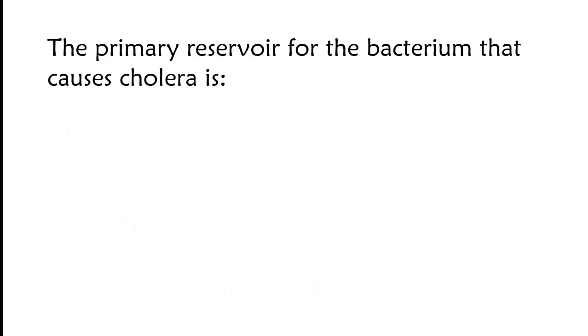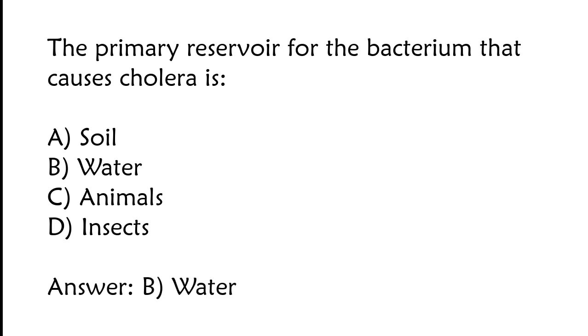The primary reservoir for the bacterium that causes cholera is soil, water, animals, or insects. The correct answer is option B, water.